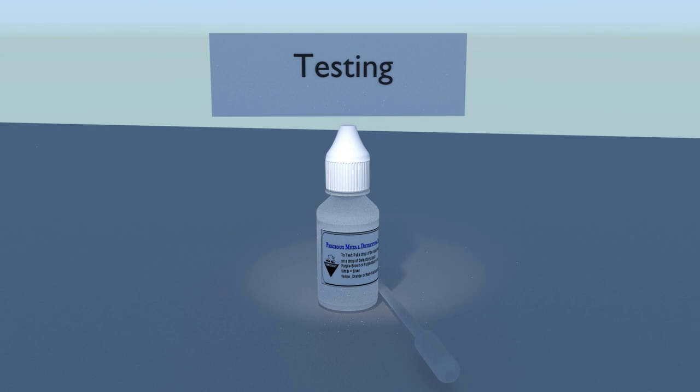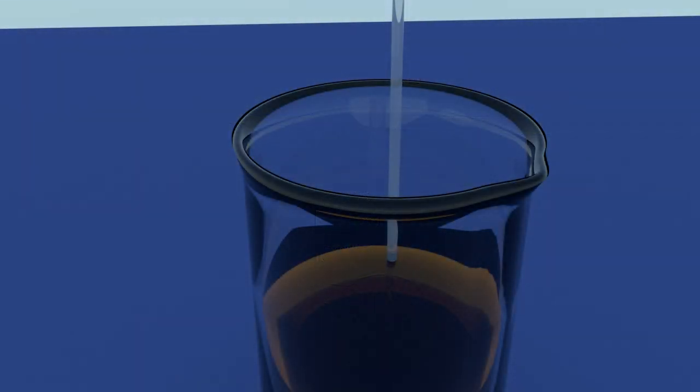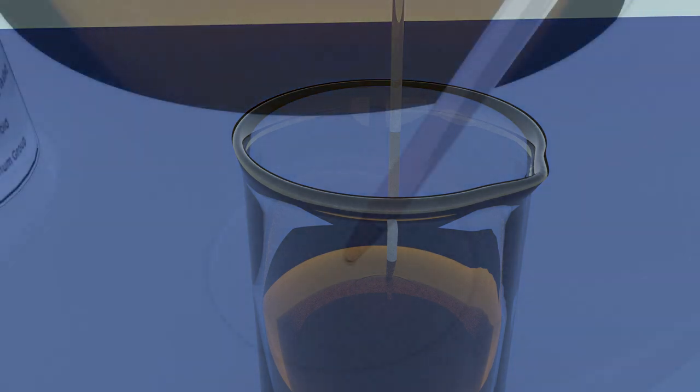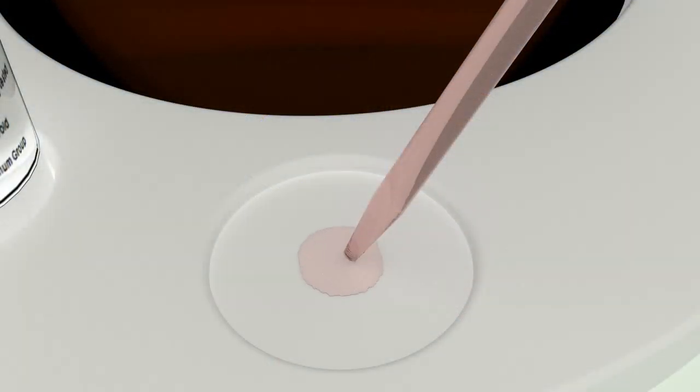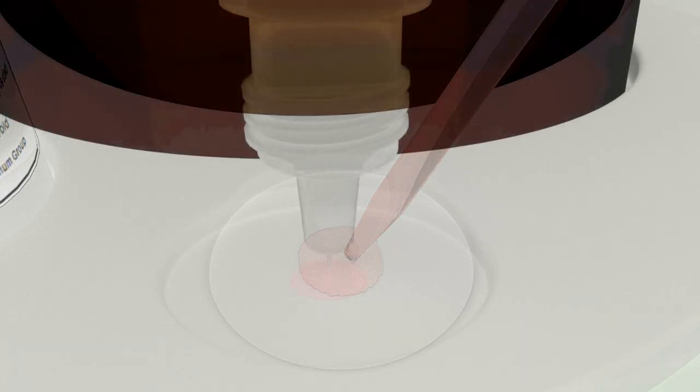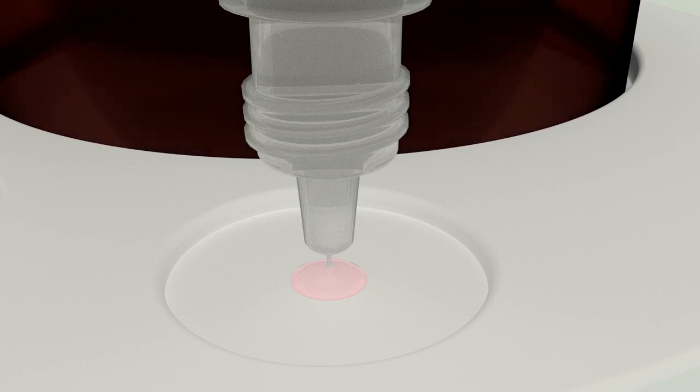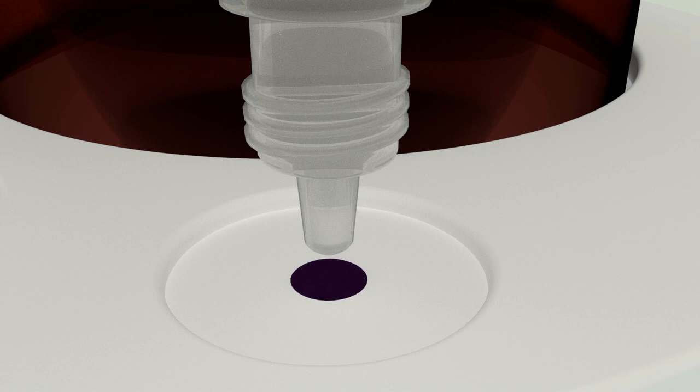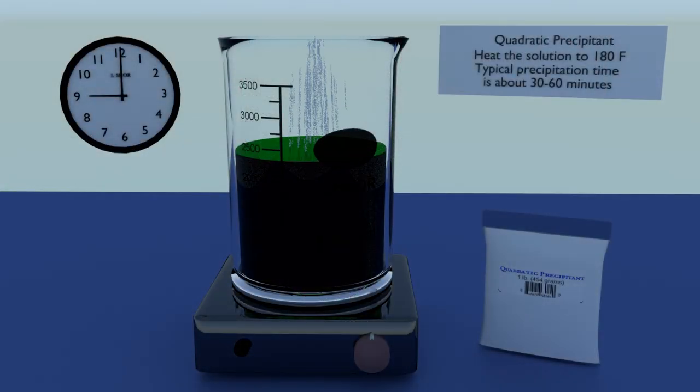Before decanting your solution into another container, you will test to confirm that no more gold remains dissolved in your salt water. This is done with precious metal test solution. Using the pipette, take a small sample of the solution from your beaker. Don't worry about picking up particles of precipitated gold. They won't show up on the test. The test liquid will only change color in the presence of dissolved precious metal. Place a few drops of the solution on a spot plate or on a paper towel. Add 1 or 2 drops of precious metal test liquid to the sample you just took. If the sample changes color to purple, brown, or black, some gold remains dissolved in solution. In that case, add a little more precipitant and give the gold some more time to precipitate out of solution.